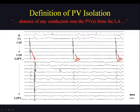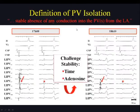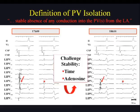Here you see a circular mapping catheter in the left inferior pulmonary vein with complete elimination of the pulmonary vein potentials. The absence of conduction into the PV has to be stable, meaning that your endpoints should be challenged either by time or by adenosine injection.